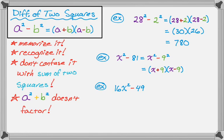So the square root of 16 is 4. The square root of x squared is x. So this is going to be the quantity 4x squared. And then minus, you can put the quantity 7 squared, or you can just write 7 squared. I'm going to put the quantity 7 squared.